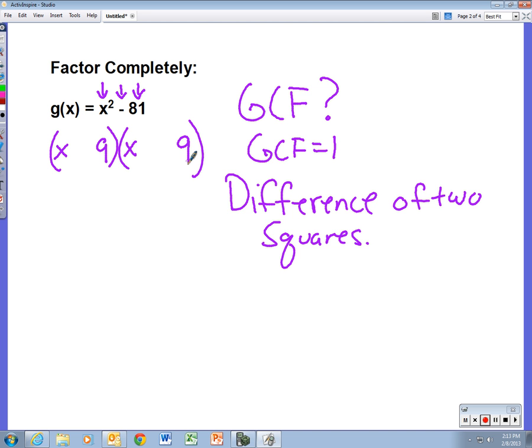Again, there's no middle term here. If there was, it would be 0x. That means in one of these we have to have a plus sign, and the other one we have to have a minus sign. A positive 9 times a negative 9 gives us the negative 81, and if we add those two together, we would get 0. There is no middle term because it would be 0. We're done—that one is factored completely.